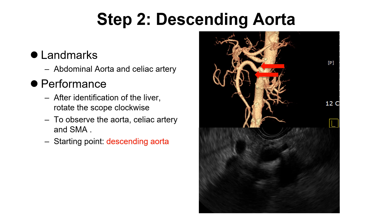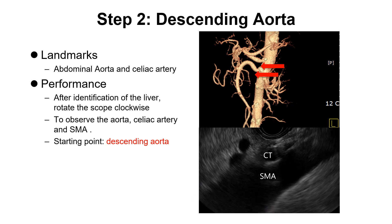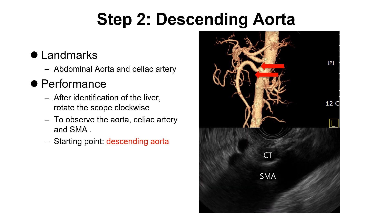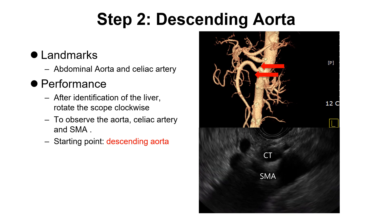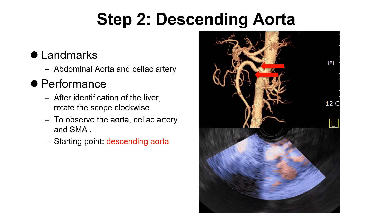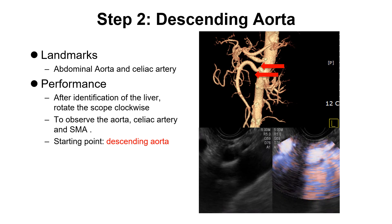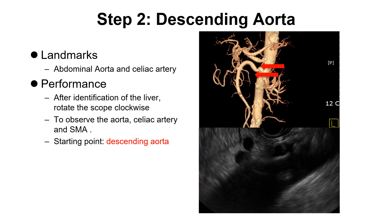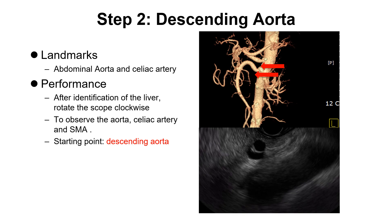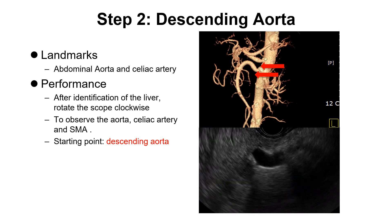Step 2: Descending aorta — that is a great home base. The celiac trunk and SMA take off from the descending aorta. On EUS video clips, we can see the descending aorta, and the celiac trunk and SMA take off. Following the celiac trunk, we can see the splenic artery and hepatic artery.